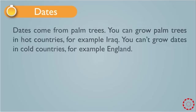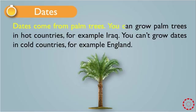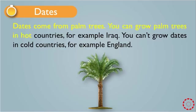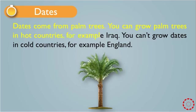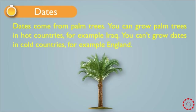Dates. Dates come from palm trees. You can grow palm trees in hot countries. For example, Iraq. You can't grow dates in cold countries. For example, England.